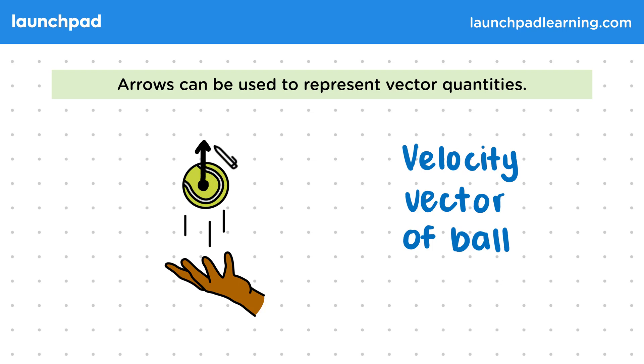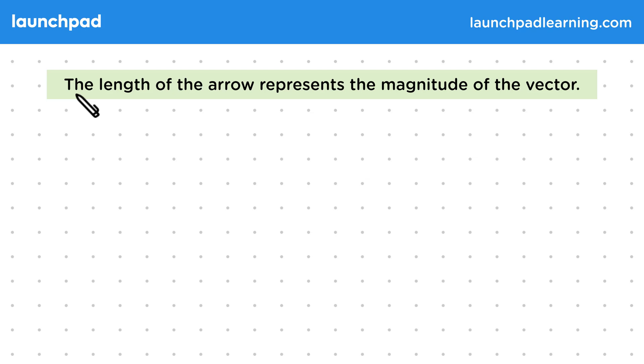Arrows can be used to represent any vector quantity, not just velocity. So how do we represent the magnitude of the vector? The length of the arrow represents the magnitude of the vector.